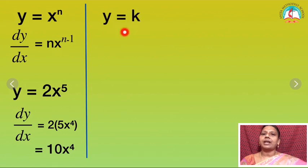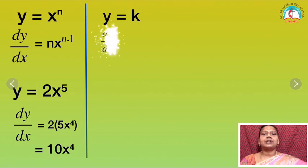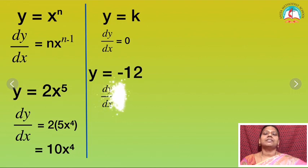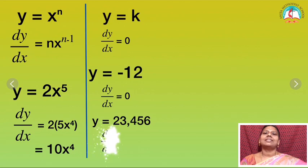For example, if I am having y is equal to some constant k — what is the difference between constant and coefficient? Coefficient means it lies along with the variable; constant means there is no variable, only a number. So the differentiation of a constant is equal to 0. For example, if I take y is equal to minus 12, or any positive or negative number, the differentiation equals 0. Even a large number like y equal to 23,456 — the differentiation is 0.